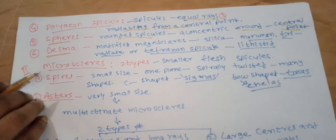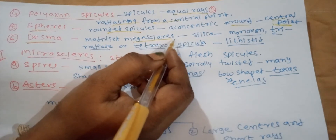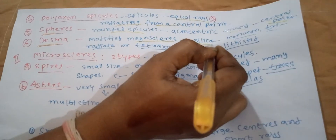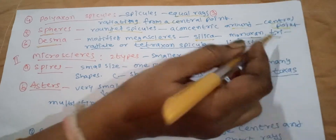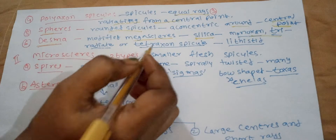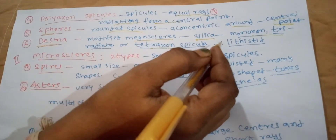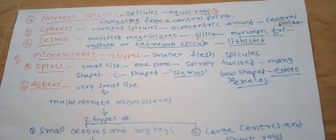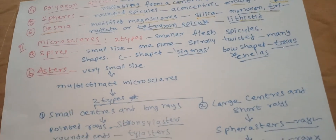Sixth type: desma. These are modified megascleres formed by the deposition of silica in irregular layers on an ordinary monaxon, triradiate, or tetraxon spicule. These are usually united into a network called lithistid.